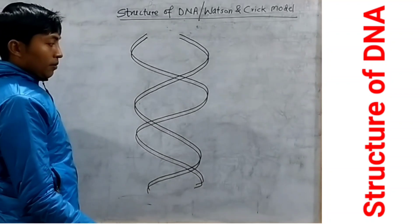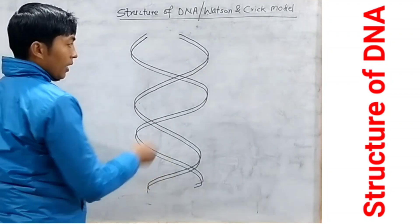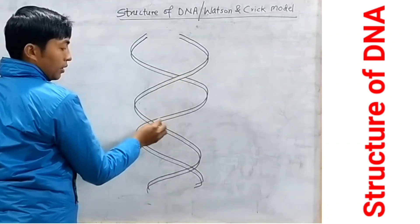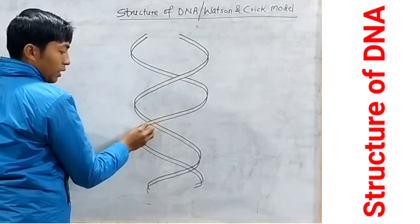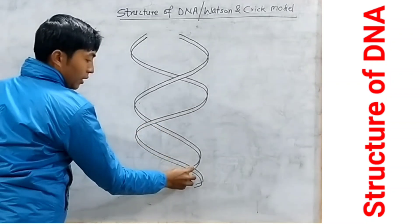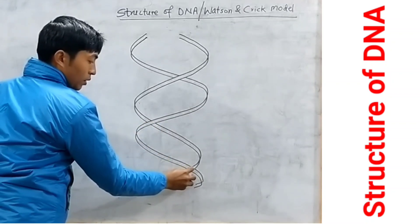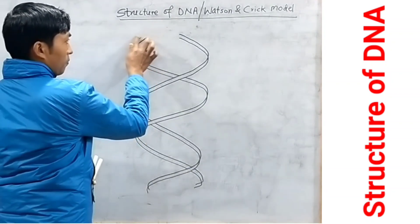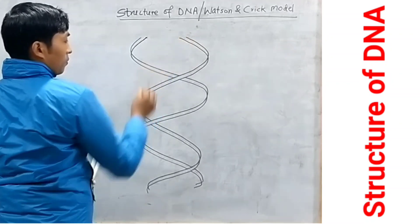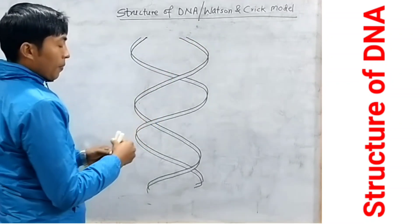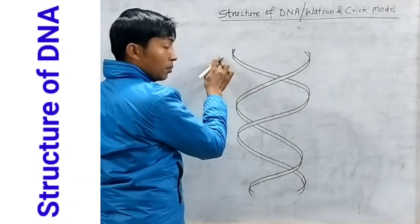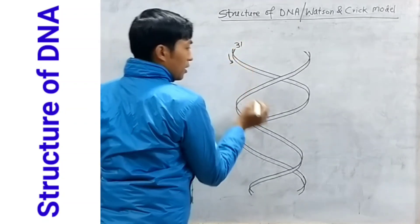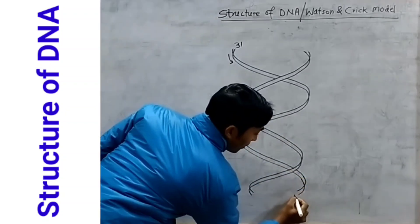Like this. Then erase this point, and this also erase, and this also erase. This is the outline of DNA. It moves top to bottom — that is 3' to 5'.